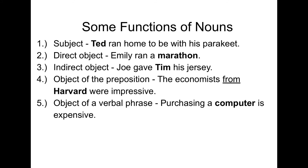Let's talk about some common functions of nouns to help you figure out where they might be in sentences. Ted is the subject — that's who completed the action. Marathon is the direct object, the recipient of the verb — ran what? Ran a marathon. Tim is the indirect object, the recipient of the direct object, the jersey. Harvard is the object of the preposition — from Harvard describes the economists. Computer is the object of this verbal phrase — purchasing a what? A computer.